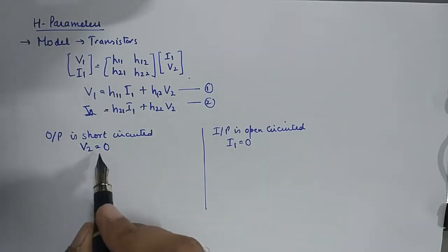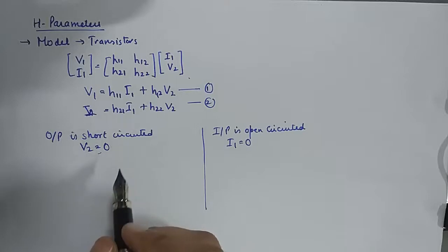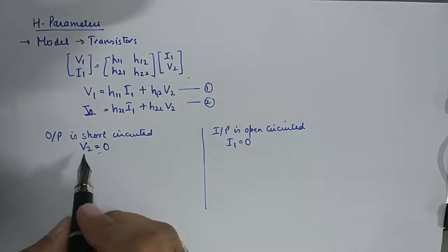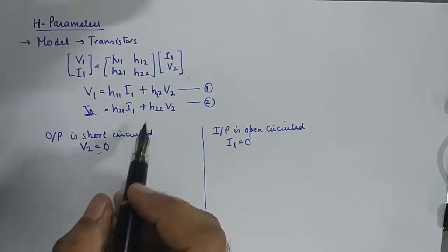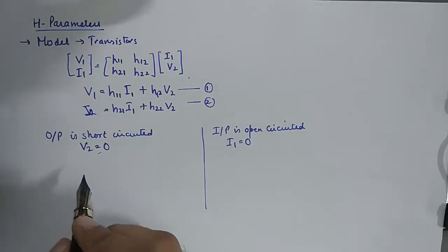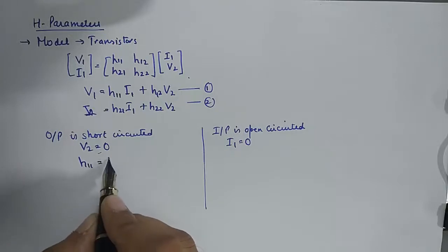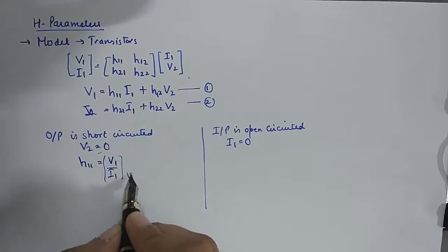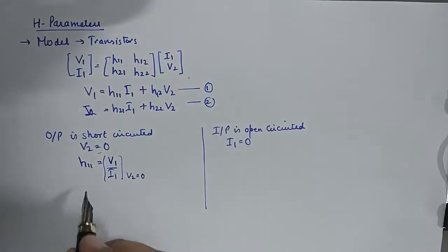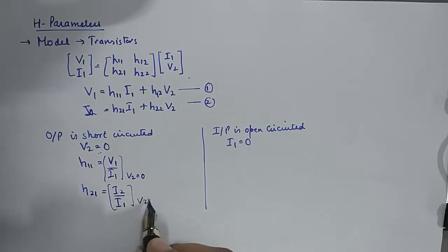You need to remember this because once you remember this, you will be able to find out the values of H parameters. So putting V2 is equal to 0 in these two equations, we get h11 to be equal to V1 upon I1, and of course this happens when V2 is 0. And h21 becomes equal to I2 upon I1. This again happens when V2 is 0.